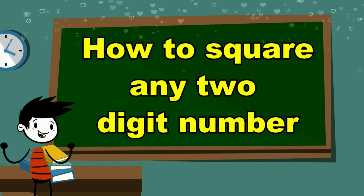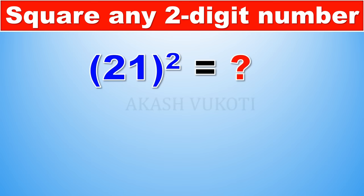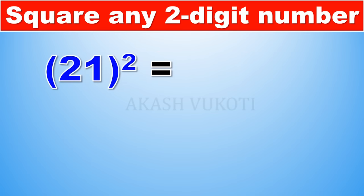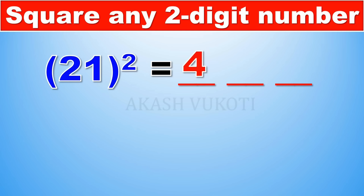This is how the trick works. We'll take an example like 21 squared. You can divide the solution into three separate parts: the first part, middle part, and last part. The first part is just the square of the first digit — for 21, the first digit is 2, so 2 squared is 4. The last part is the square of the last digit: 1 squared is 1.